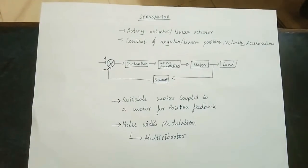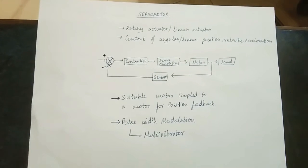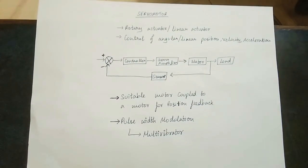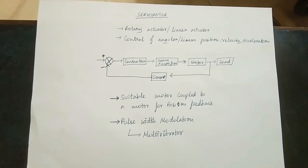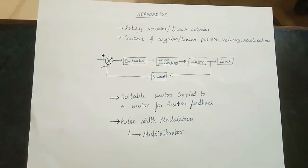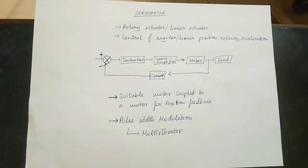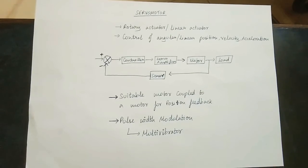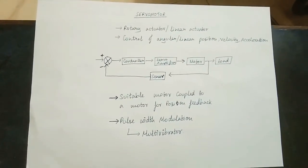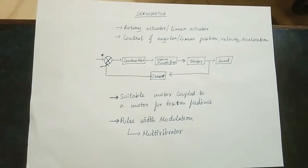Pulse Width Modulation — this is a very important topic. How do you use this? The technique uses an electrical signal whose width is modulated. You can use this to activate the motor. The servo motor uses Pulse Width Modulation. It uses a multivibrator — either a monostable multivibrator or an astable multivibrator, using either a transistor or IC 555.